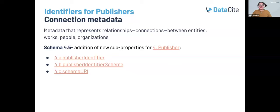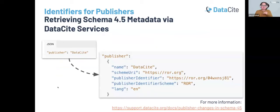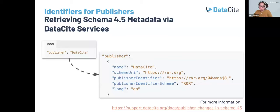Similar to the affiliation identifier introduced in 4.3, the publisher identifier can support any identifier scheme, but we really recommend the use of ROR IDs for an organization. This also meant we had to update the structure of publisher — previously it was a simple string value carrying the publisher's name, but now it looks a bit different to be able to carry the scheme URI, the publisher identifier, and so on. This required some adjustments to our APIs and services. Content negotiation and the DataCite GraphQL API will be adjusted to support this new publisher format. Please go to our support site to learn more about this process in detail.